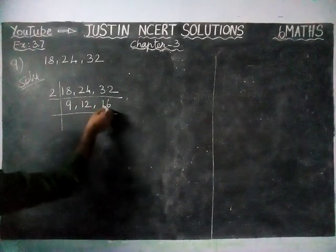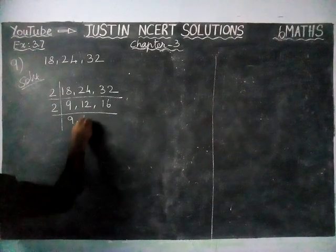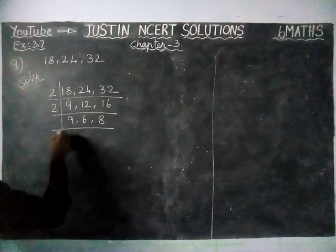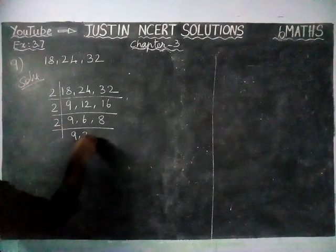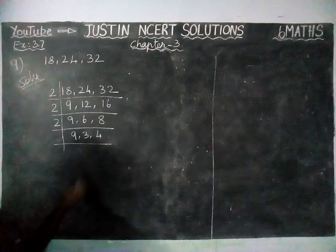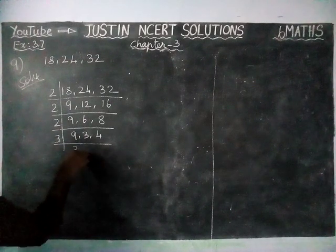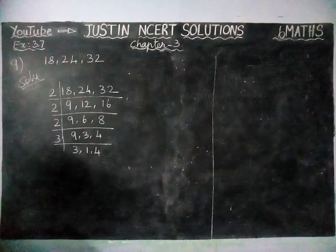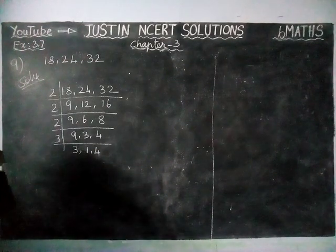Now we are going to divide by 2 again: we get 9, 6, and 8. Again dividing by 2: we get 9, 3, and 4. Now we are going to divide by 3: 3 threes are 9, giving 3; and 1 three is 3. The 4 remains as it is. Now 3 and 4 don't have any common divisors.